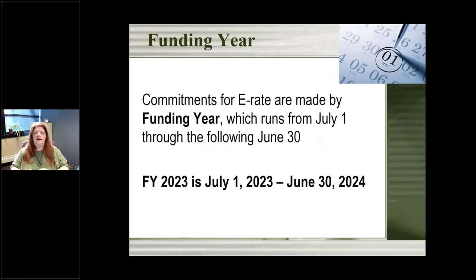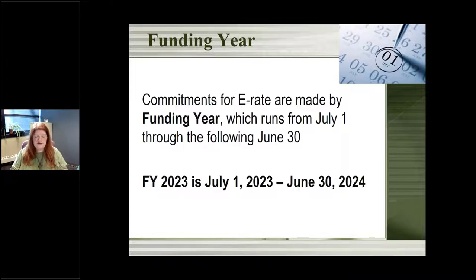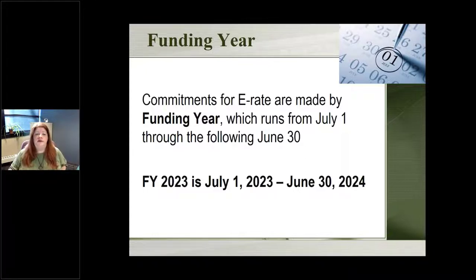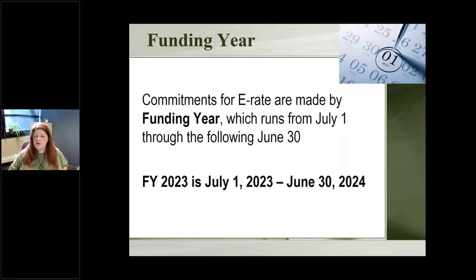E-rate is done on a funding year — everything revolves around this funding year. It's done annually; every year you have to apply for E-rate for the next upcoming year. Right now, when you're attending these workshops and thinking about E-rate, you're thinking about whatever discounts you will receive starting July 1st of next year. The funding years run from July 1st to June 30th of every year. So funding year 2023 starts July 1st, 2023 and runs through June 30th, 2024.